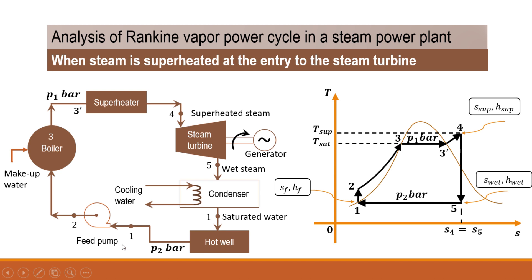Starting with the feed pump: from the hot well, water is supplied to the boiler via the feed pump. Process 1 to 2 is the pump work. In the boiler, heat is supplied in various forms — sensible heat, latent heat — and when the steam becomes dry saturated at boiler pressure P1, it is supplied to the superheater.